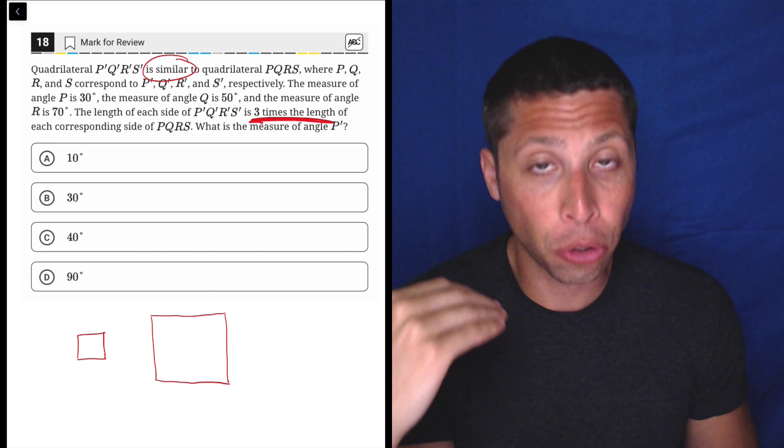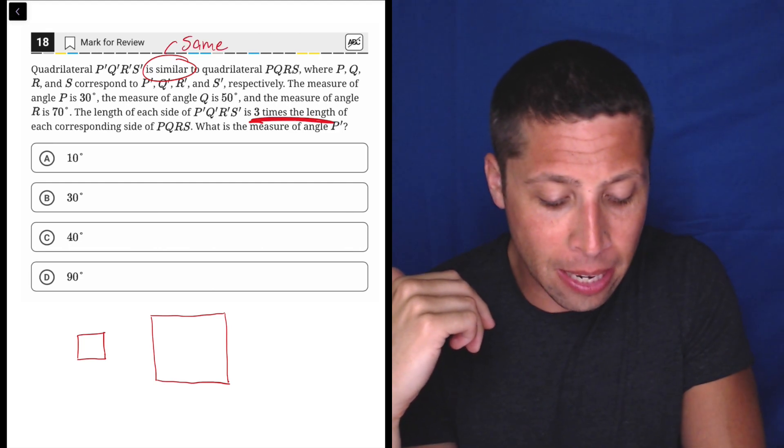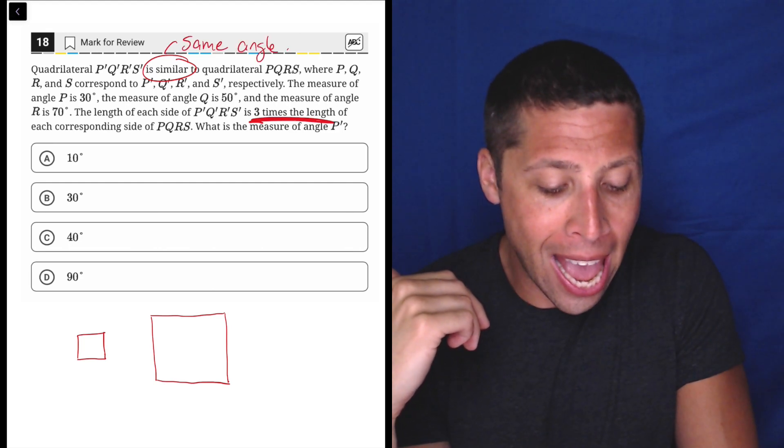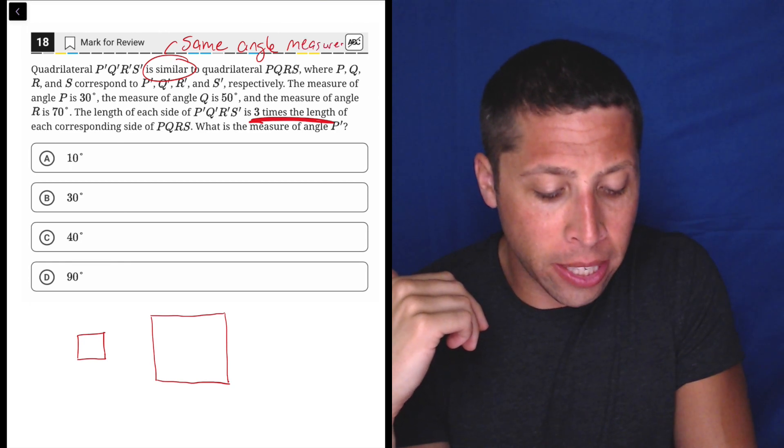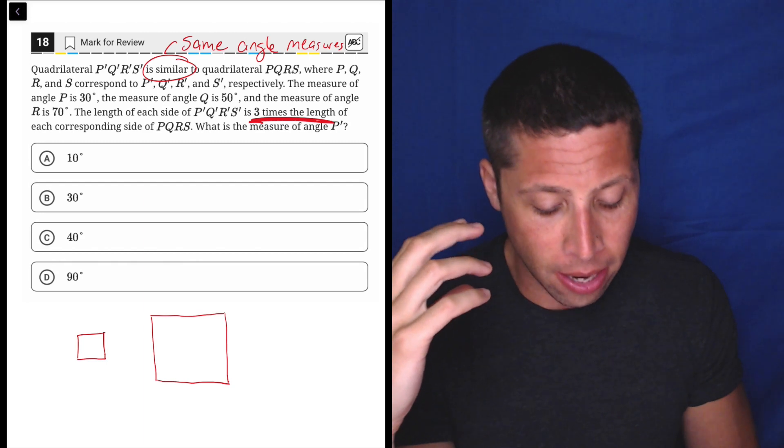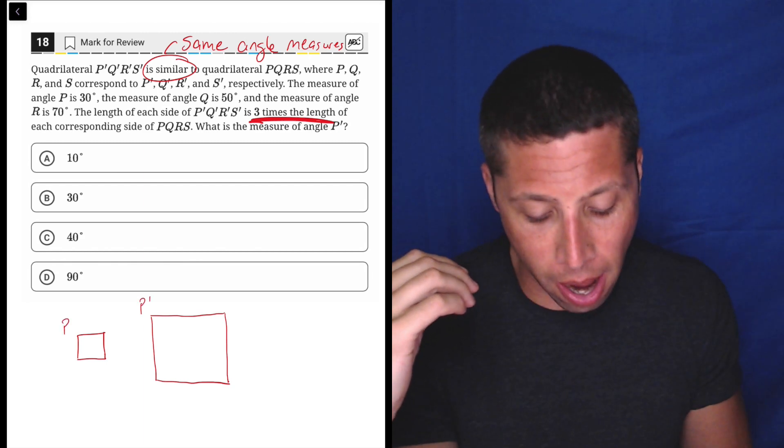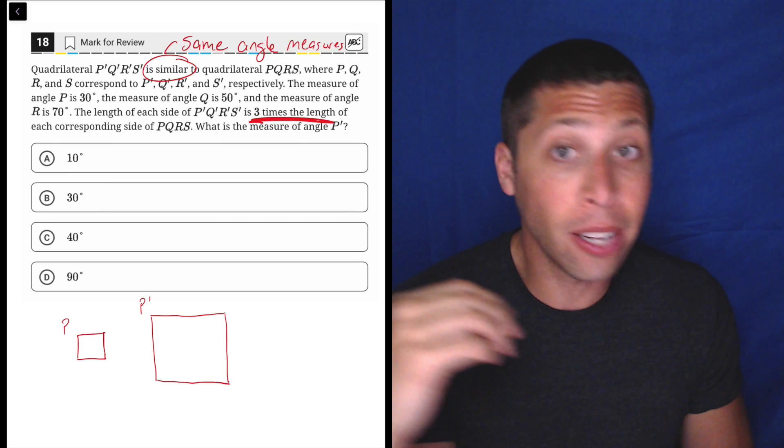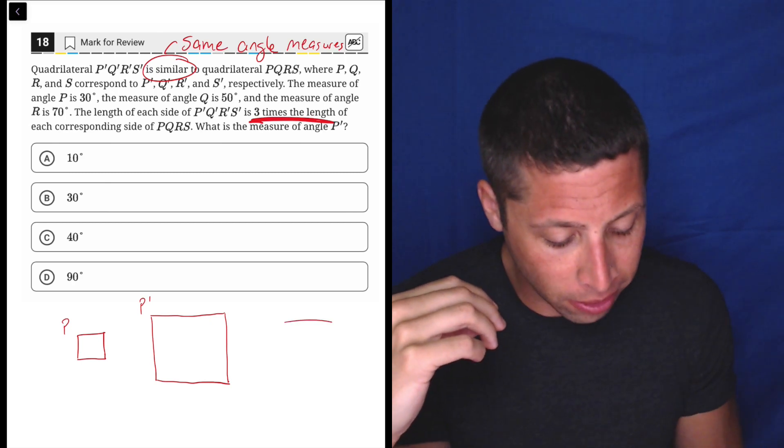Because for similar triangles, what really matters is that they have the same angle measures. And I don't mean that all of the angles are the same, like in this case where they're all 90 degrees. I mean that if this is P and this is P prime, then those two angles are going to have the same measure.